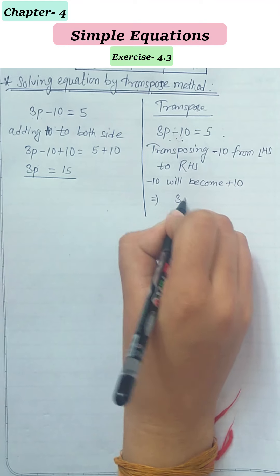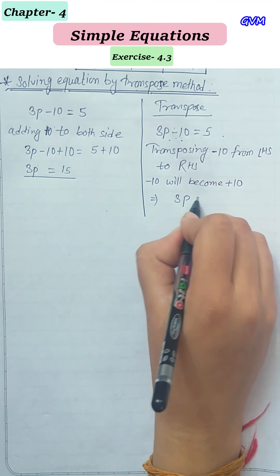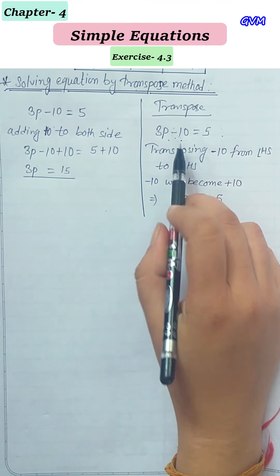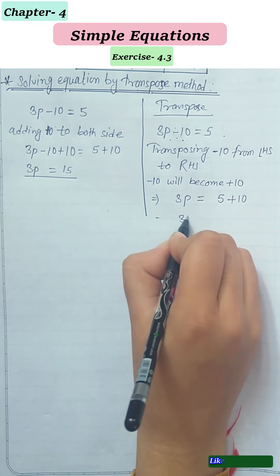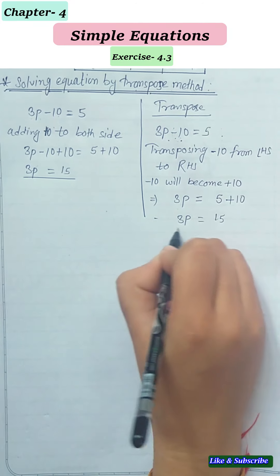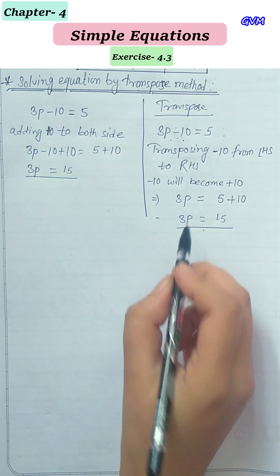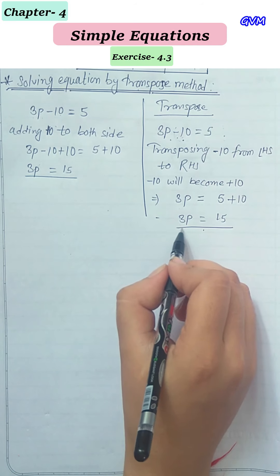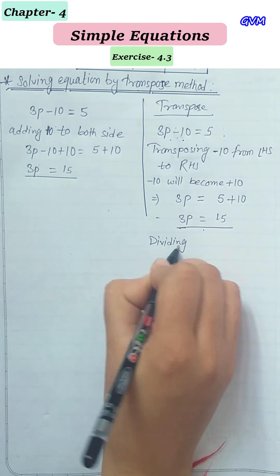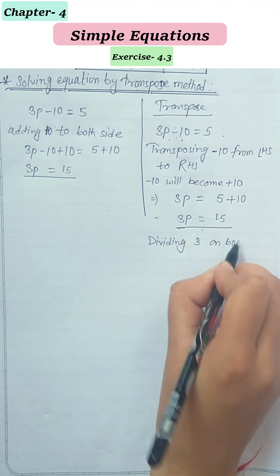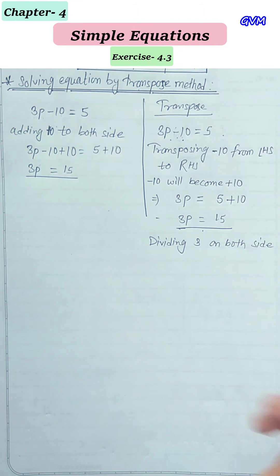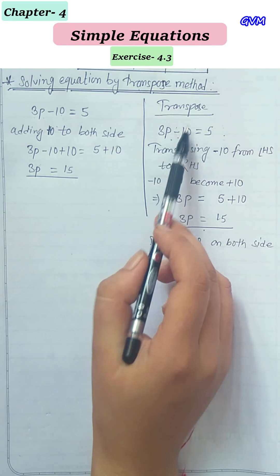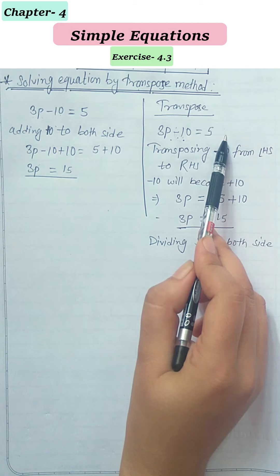So we write: 3p = 5 + 10 = 15. We get the same answer. Now we can solve by dividing both sides by 3. Similarly, when a number is plus, you transpose it and it becomes minus. This is the transpose method.